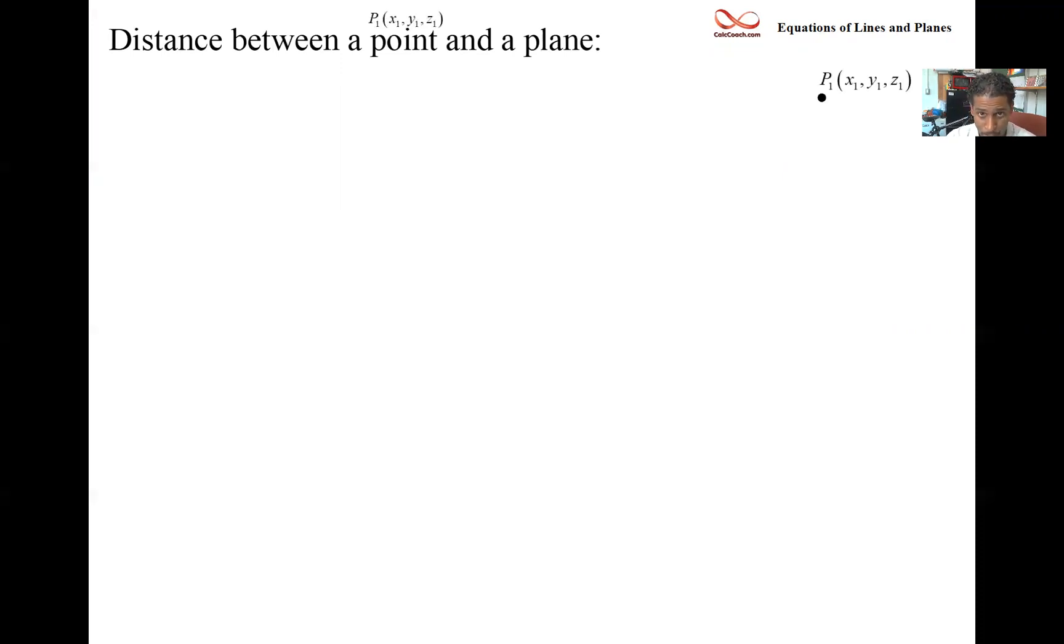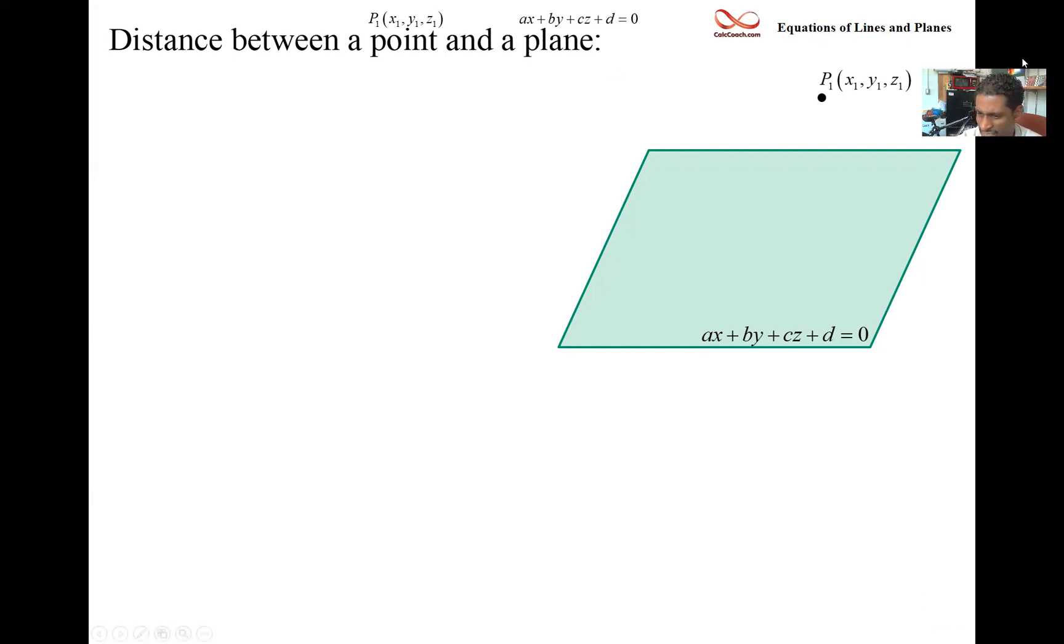So we have a point and we have a plane. Generally, the point is x₁, y₁, z₁, and the plane is ax + by + cz + d = 0.